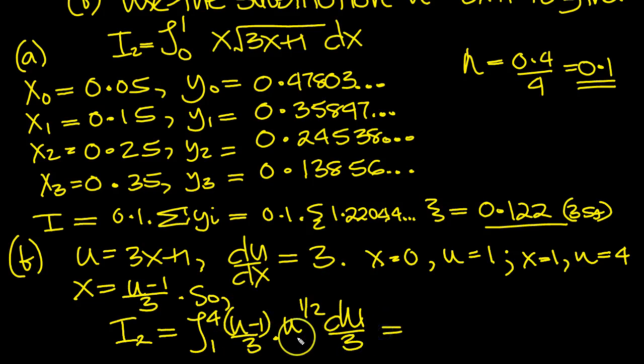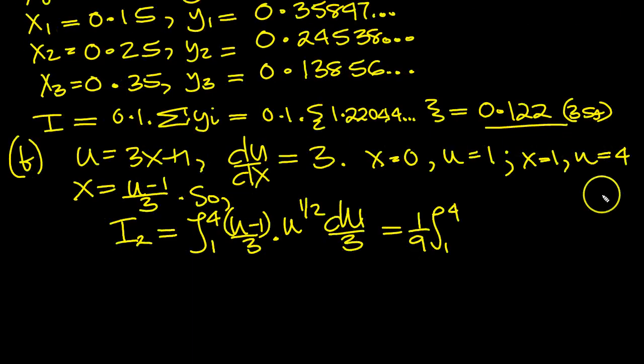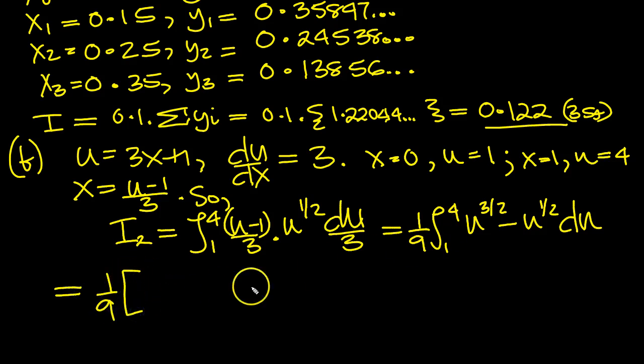So that's equal to a ninth, take that out of the front, the integral between 1 and 4. We've expanded the bracket then, and we get powers of u. So it's u to the 3 over 2, minus u to the half, du. Now we can do the integration. So it would be u to the 5 over 2, over 5 over 2. So the 2 underneath swings up to the top, minus u to the 3 over 2, over 3 over 2. The 2 that's underneath swings up to the top again. So we get that, between 1 and 4.